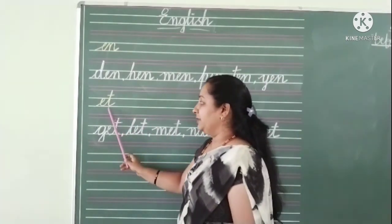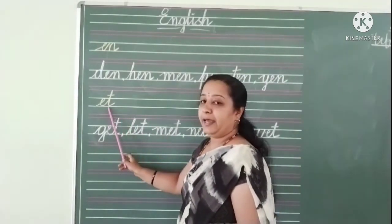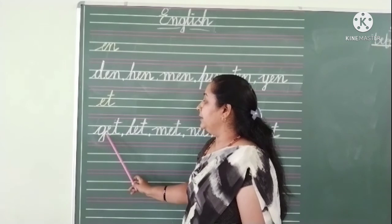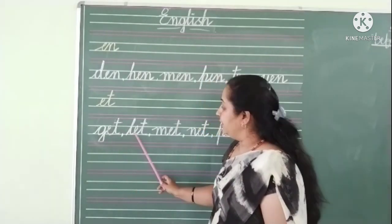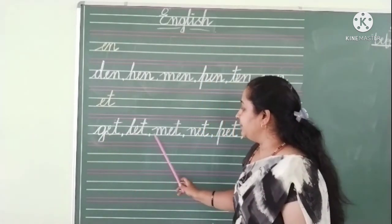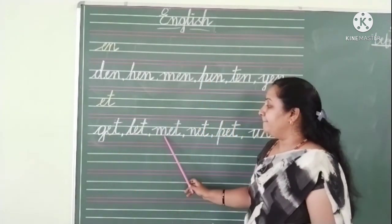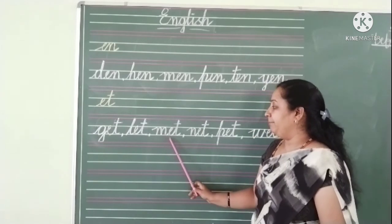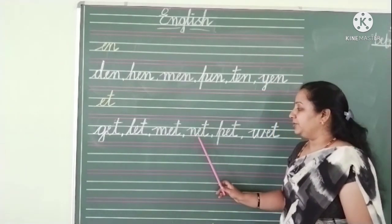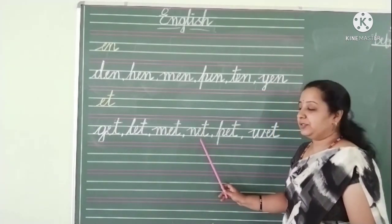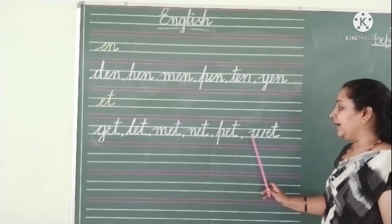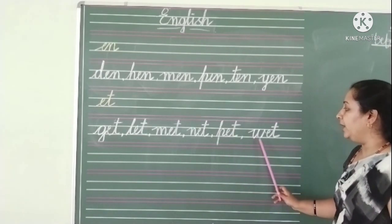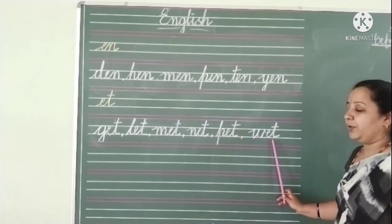The next set of words are ET family words. G-E-T — get. L-E-T — let. M-E-T — met. N-E-T — net. P-E-T — pet. And W-E-T — wet.